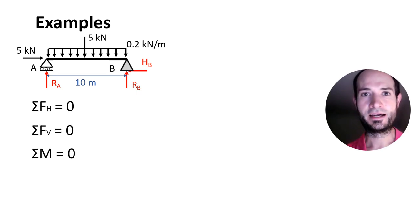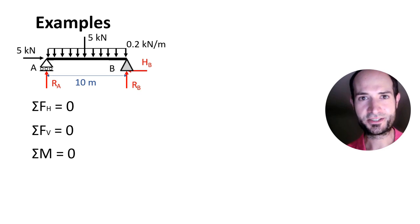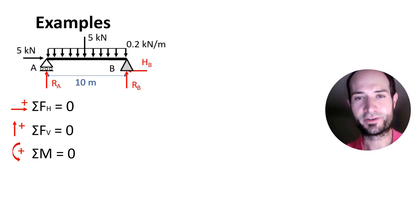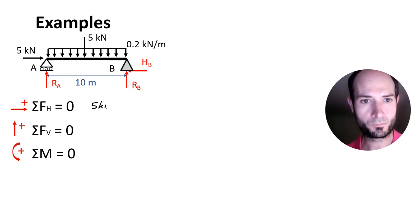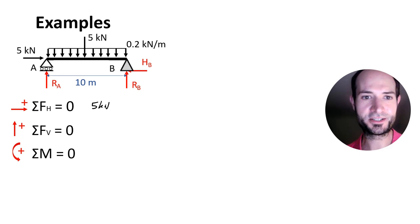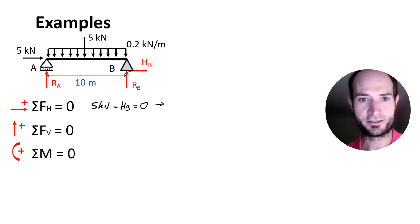As always, it's very good practice to indicate what will be your positive directions for the loads. In my case I'm going from left to right considering positive, and for the moment, as always, anticlockwise is positive. Let's go from top to bottom. Horizontal loads equal zero: we have 5 kN positive because it goes towards the right, and then we have Hb going in the opposite direction, so it will be negative. Therefore Hb equals 5 kN.